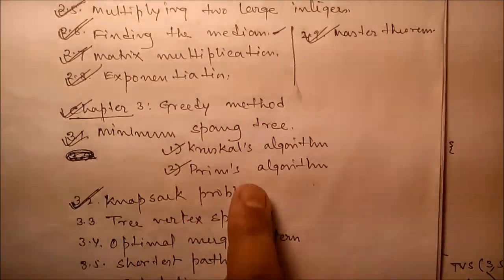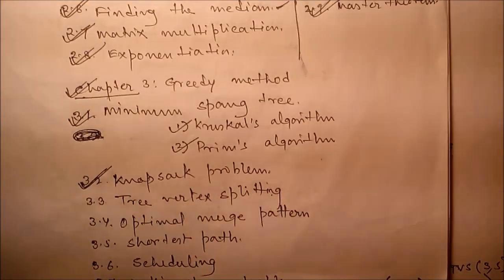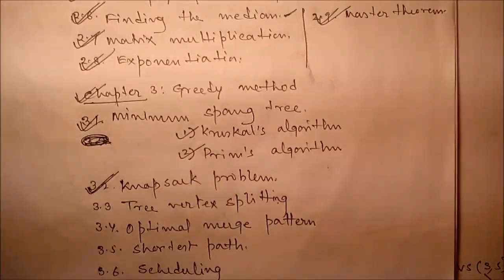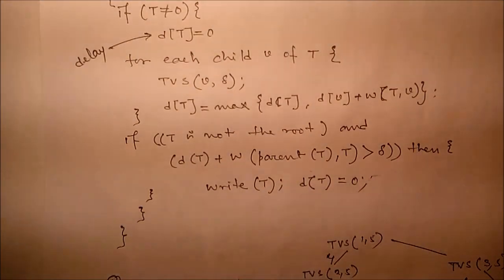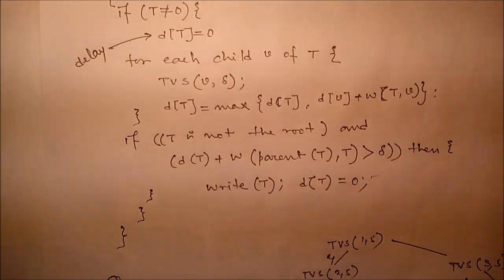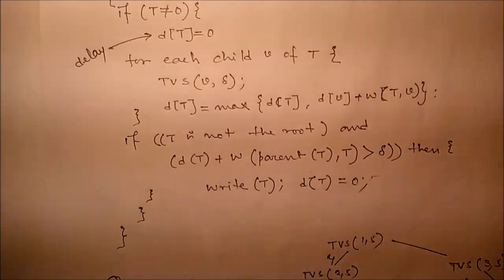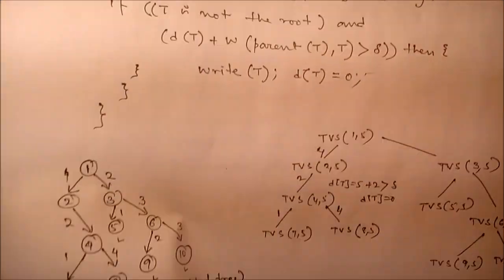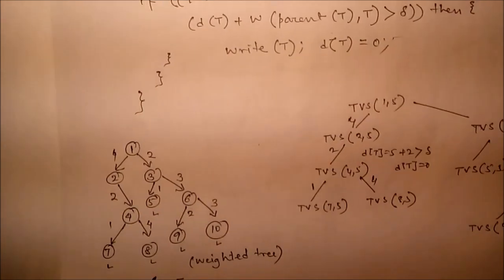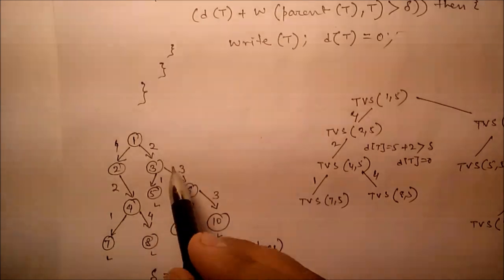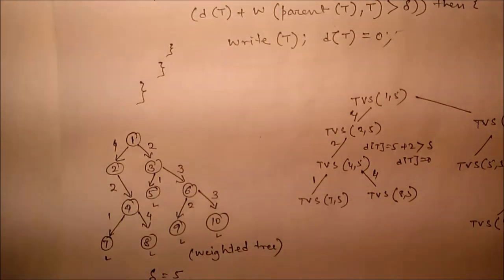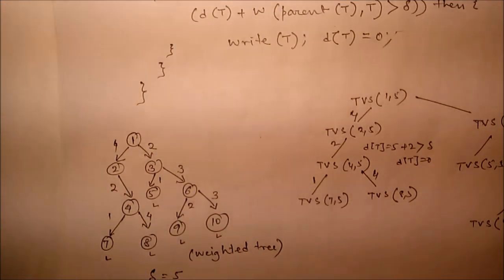In the greedy method, we have completed minimum cost spanning tree and the knapsack problem. Now we are going to discuss tree vertex splitting. Consider a directed binary tree labeled with real numbers — these are called weighted trees. One such tree has weights four, two, three, one.